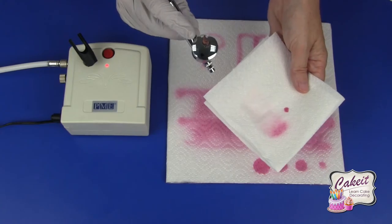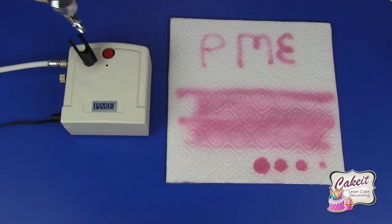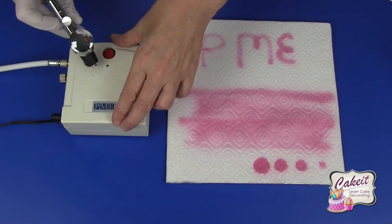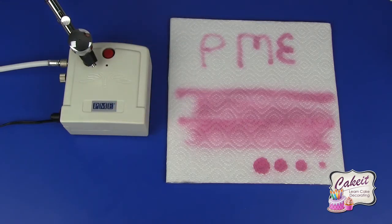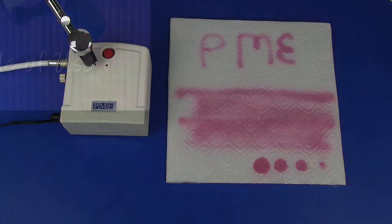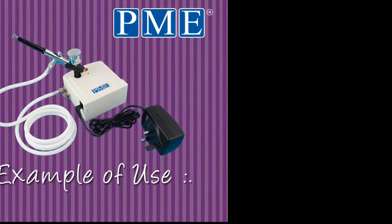So this means that it's clean and just replace that back into the holder. And that's how to use the PME airbrush and compressor.